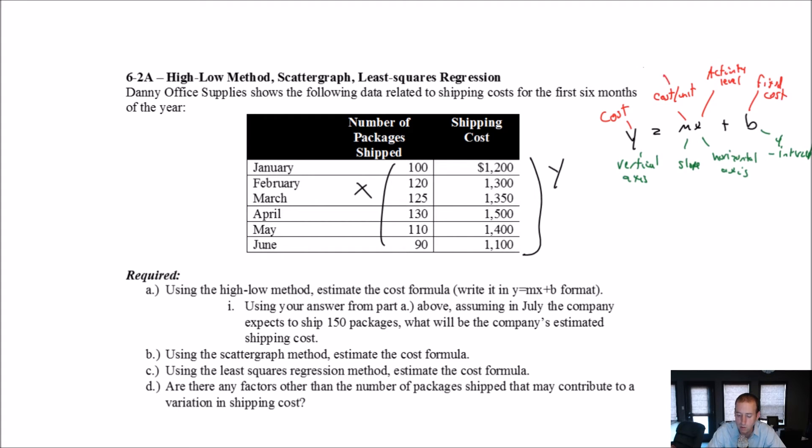And we talk about cost per unit. That means variable cost per unit, per unit of activity, I should say. Okay. So using the high-low method, estimate the cost formula. If you haven't seen high-low method before, here's how we do it.